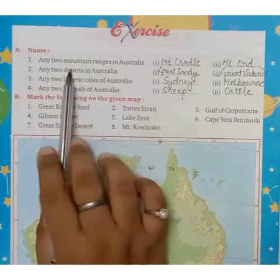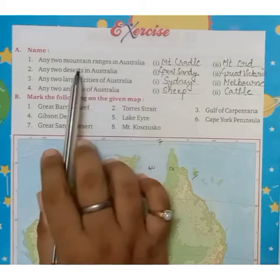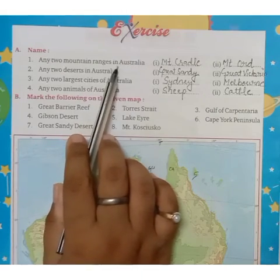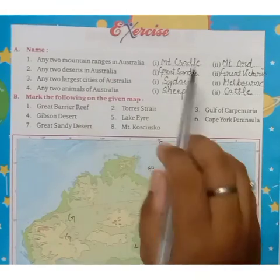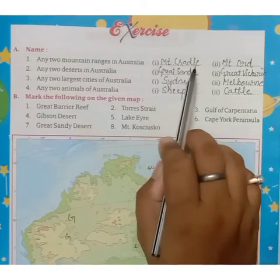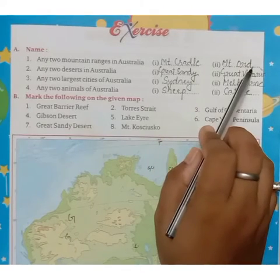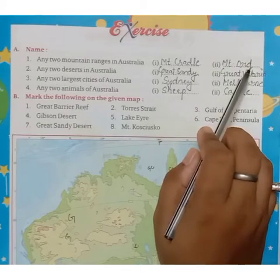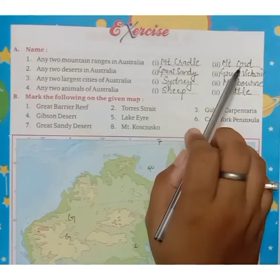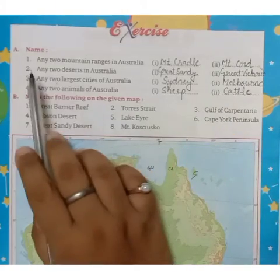You have to name any two mountain ranges in Australia. So what you will write is: Cradle Mountain and Mount Old. These are the two mountain ranges in Australia.